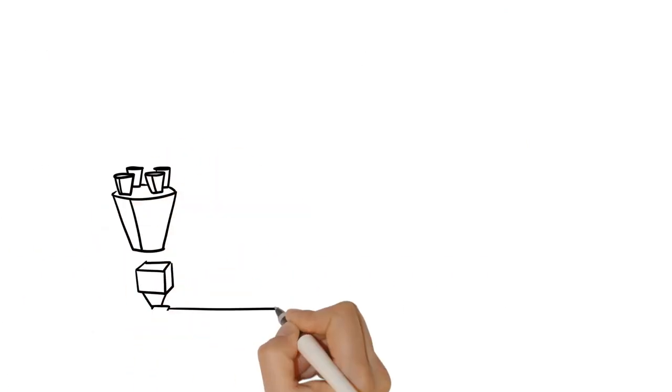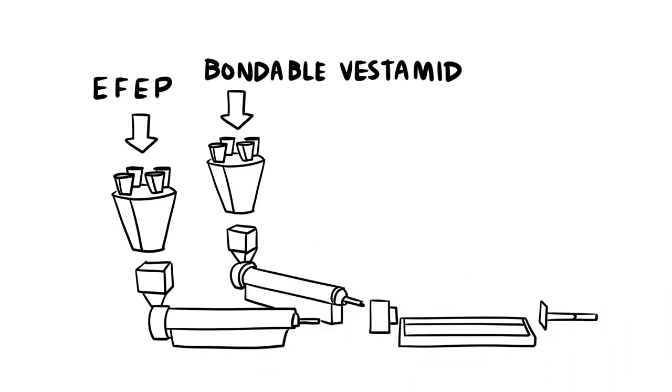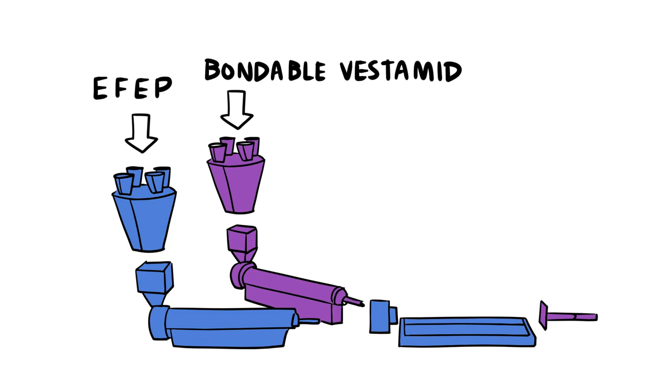Due to the unique chemistry of bondable Vestamid, the process is very simple. First, fluoropolymer is extruded from extruder 1. Second, bondable Vestamid ejects from extruder 2 simultaneously.